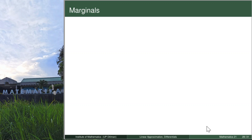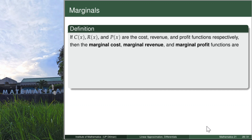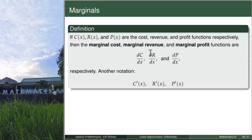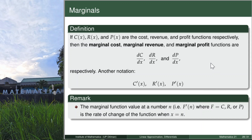What are the marginals? If C, R, and P are the cost, revenue, and profit functions respectively, then the marginal cost, marginal revenue, and marginal profit functions are simply the derivatives C', R', and P' with respect to x. The marginal function value at a certain number N is the rate of change of cost, revenue, or profit when the production level x equals N.